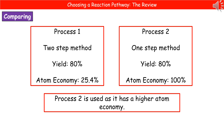A typical exam question here will give you two different processes to manufacture the same product. There'll be a few bits of information in a table that they give you, and you then need to identify which is the best reaction pathway to use. Here's a simplified example.